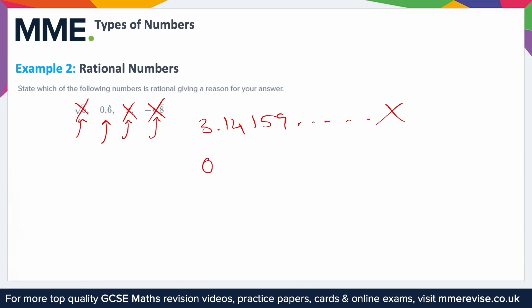Well, I can write it as a fraction. So 0.6 recurring, this means 0.666666 and so on. It just keeps going on forever with sixes. I can write this as a fraction as two-thirds. So I've wrote it as a fraction with an integer value on the top and integer value on the bottom, so it's definitely rational.